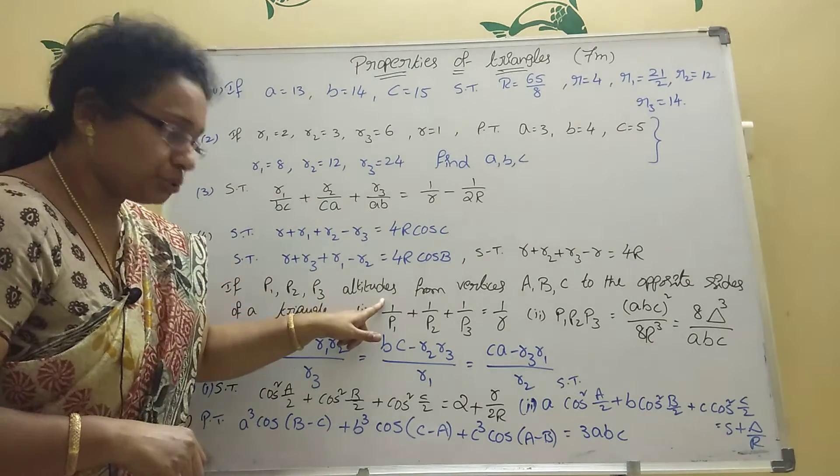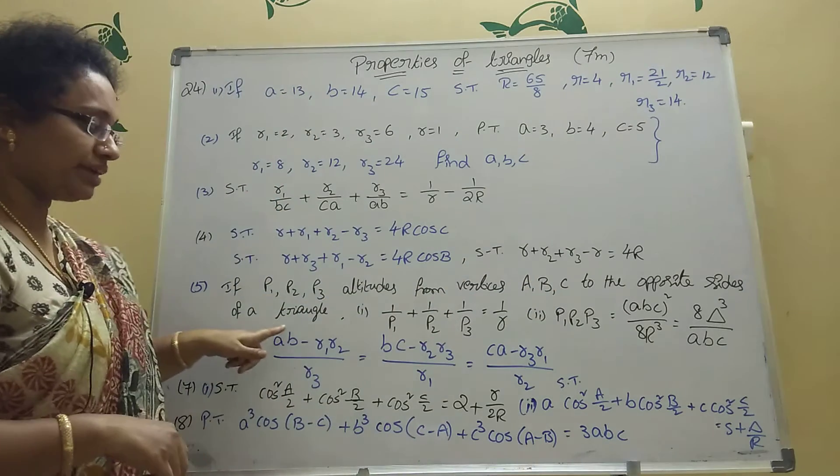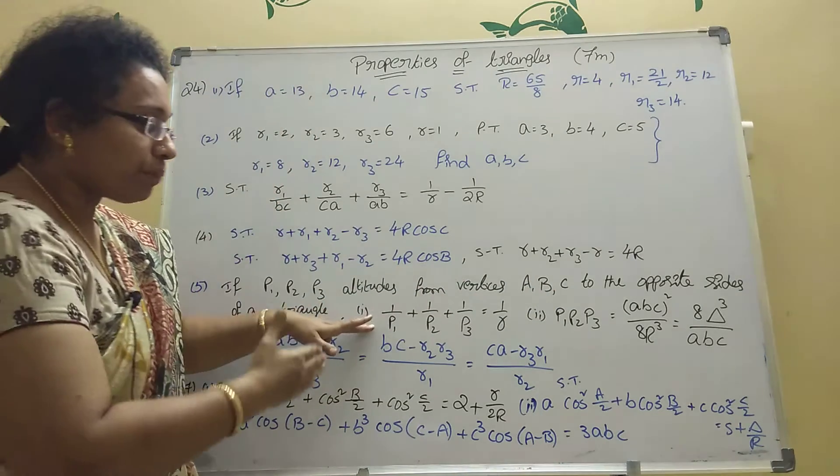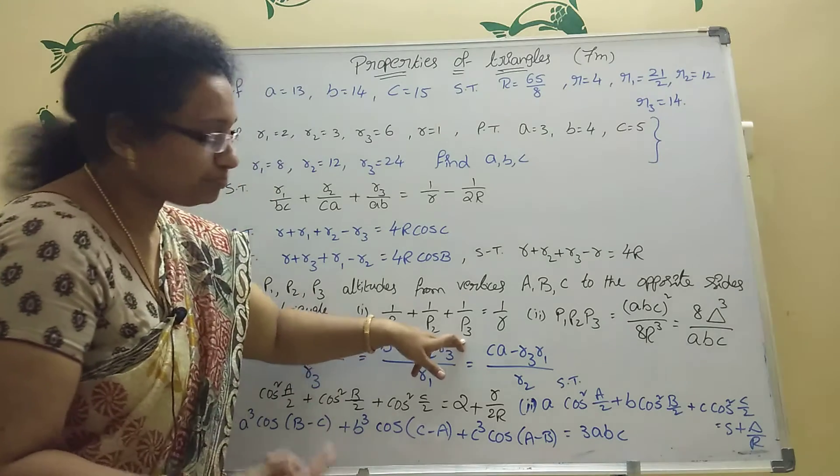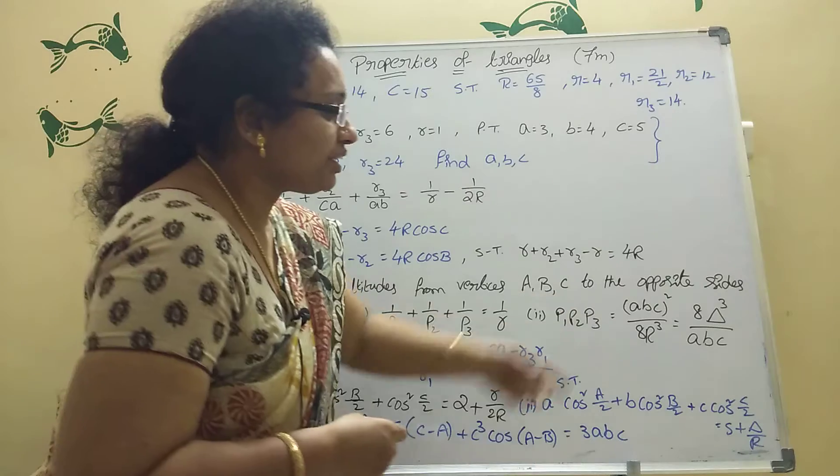Now fifth bit. P1, P2, P3 are altitudes from vertices A, B, C to the opposite sides of the triangle. Then prove that 1 by P1 plus 1 by P2, 1 by P1 plus 1 by P3 equal to 1 by R. And second bit, P1, P2, P3 equal what?